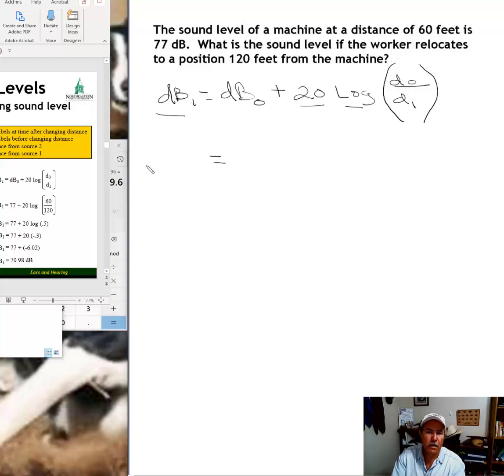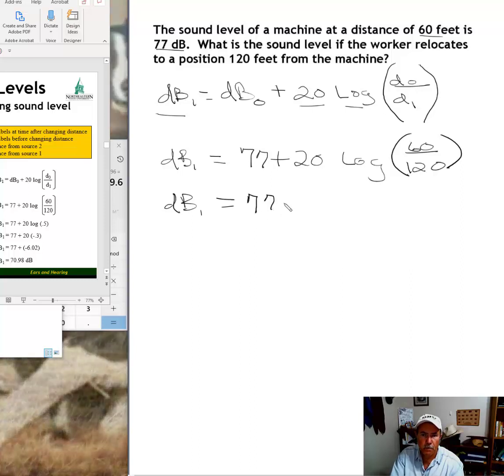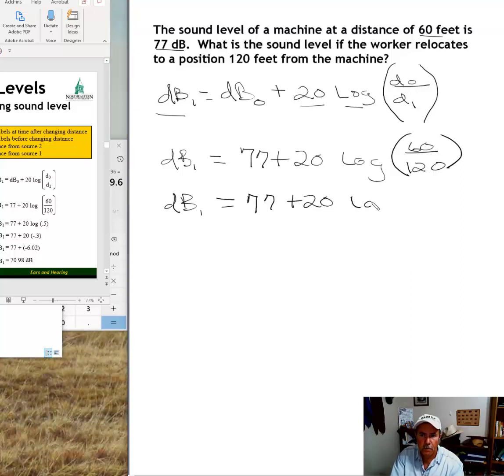Go ahead and plug everything in. Okay, the original sound level is 77 decibels at 60 feet. So we plug in 77 plus 20 log. Now we want D sub zero, which is the original distance, which is 60 feet. Then D sub one is the relocation distance, 120 feet.